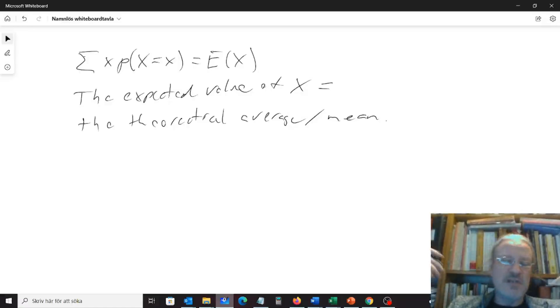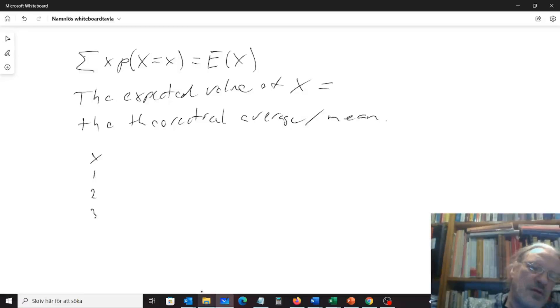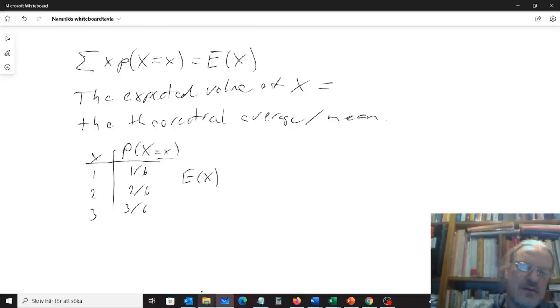But now it's called expected value, so we have to live with that. You can look at the example we had in the last video, so we had this die that could get the result 1, 2, 3, and the probability here of getting that particular x value was 1 out of 6, 2 out of 6, and 3 out of 6. So we could calculate expected value, so our theoretical average.